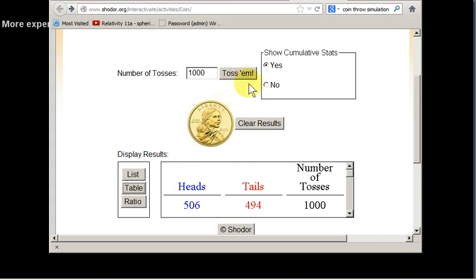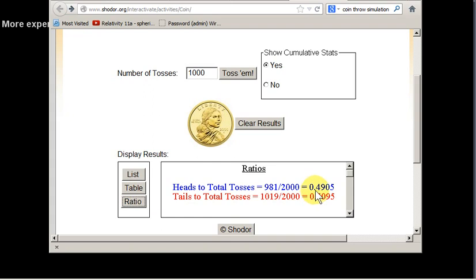Now we're getting the results for 2,000 tosses of a coin. We get 981 heads. So now the relative frequency of heads is 0.4905. That's for 2,000 tosses.